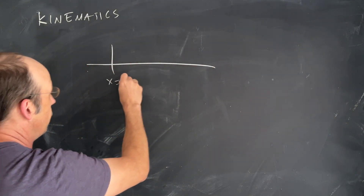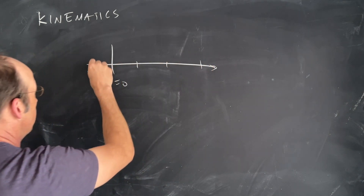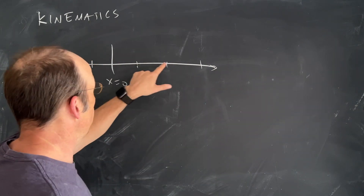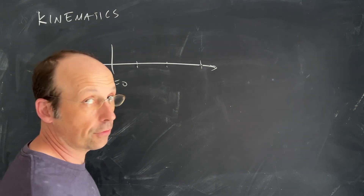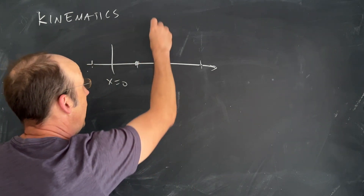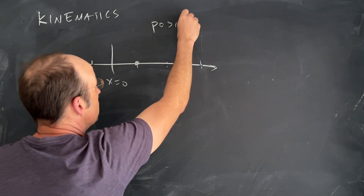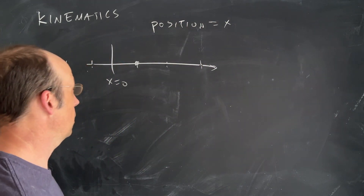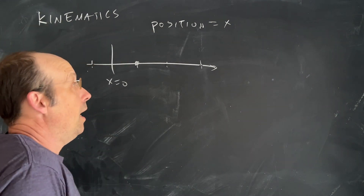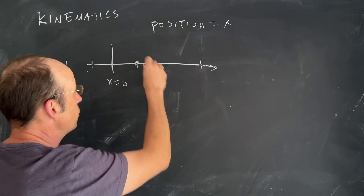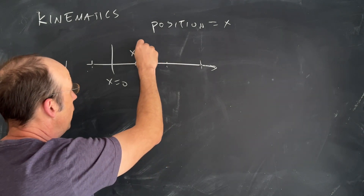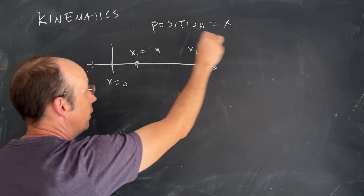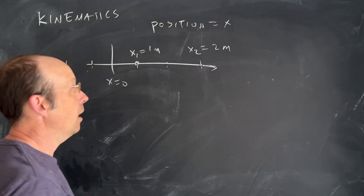Here is x equals zero, and then I can break these into ticks — each of those are one unit, one meter: one meter, two meters, three meters, negative one, negative two, negative three, and so forth. So we define the position as x. Position is x — where is it? But kinematics deals with motion. So imagine that I start here and move over here. I start at x1 equals one, and then x2 equals two meters.